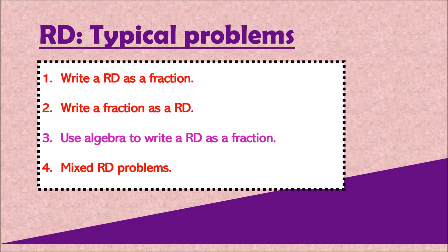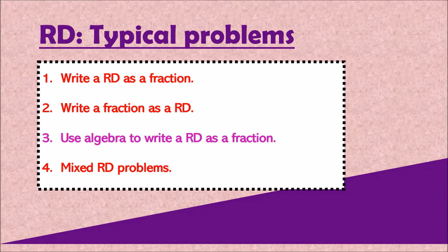Before we look at exam questions, let me break down the typical problems you'd see. RD stands for recurring decimals. There are four types: writing a recurring decimal as a fraction using a nice trick, writing a fraction as a recurring decimal, using algebra to write a recurring decimal as a fraction — where you let x equal the recurring decimal, do some subtraction and get your fraction — and applied questions using all your knowledge.